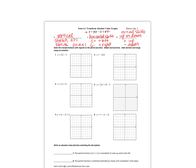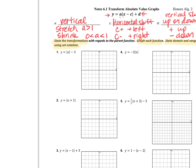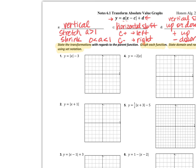We're going to put this into play with each of the functions on the paper. Our instructions say: state the transformations with regard to the parent function, graph each function, and state domain and range using set notation. So let's look at number one. The first thing I want to do is state the transformations — the negative three is going to move my graph down three units.